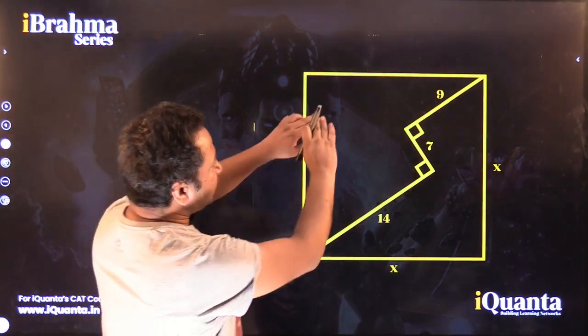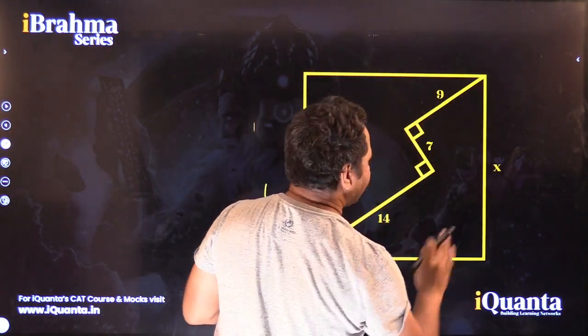So we will understand the step by step solution to this question. Now look at this, this is a square and the length of the side is given as x units.